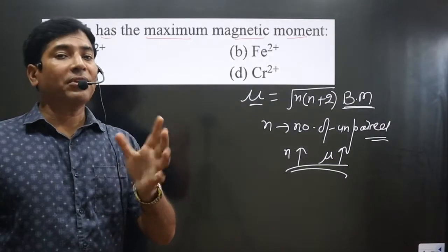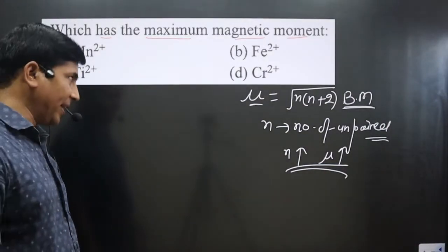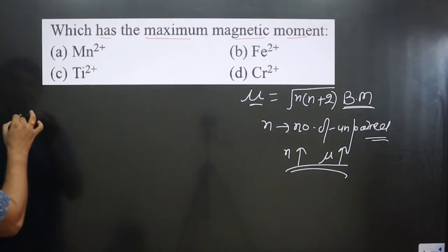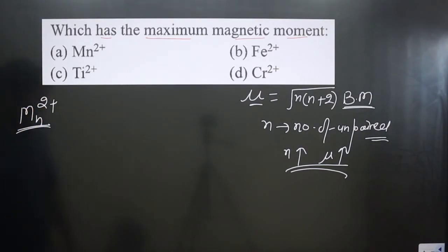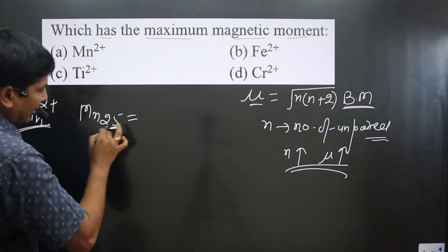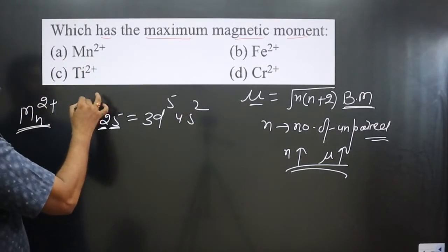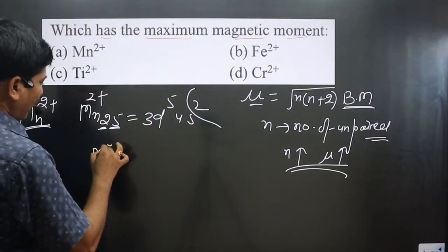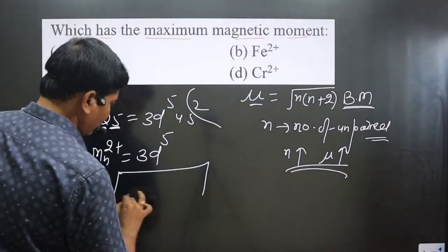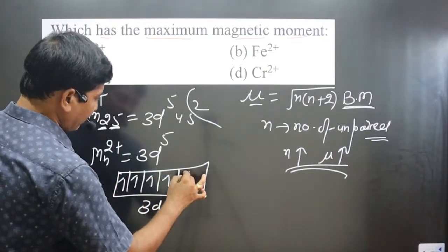For each species, we first calculate the number of unpaired electrons — whichever has the higher number will have the higher magnetic moment. Let's write the orbital notation. For Mn²⁺, manganese has atomic number 25. Its outermost electronic configuration is 3d⁵ 4s². Since it loses two electrons, Mn²⁺ gives us 3d⁵. The d orbital has five boxes, and 3d⁵ fills each box with one electron.